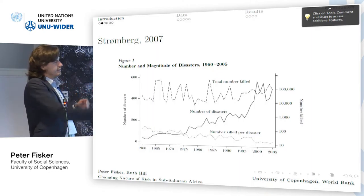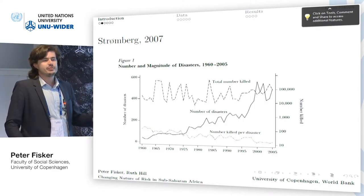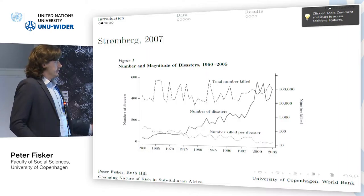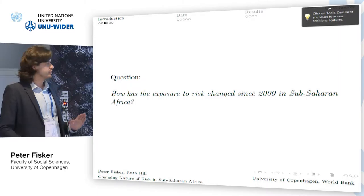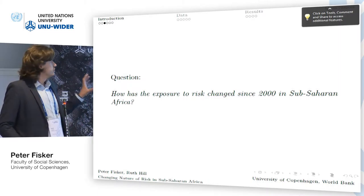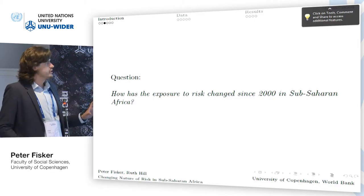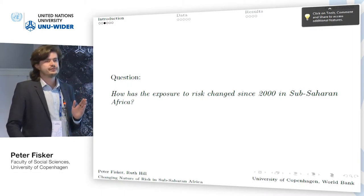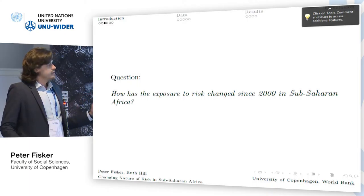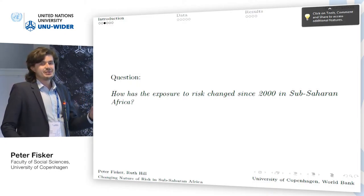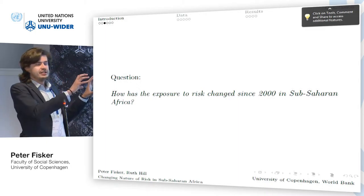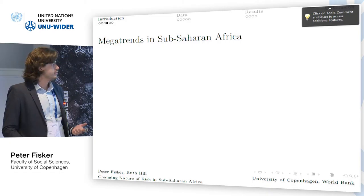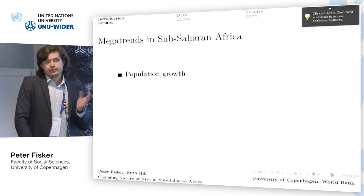Simply, more events enter into this database as the years go by because people are more aware of disastrous events taking place. Anyway, what we want to look at in this study is the exposure component. Our question is: how has the exposure to risk changed since 2000 in sub-Saharan Africa? We look at the period 2000 to 2015, completely disregarding the vulnerability component. We look at hazards and population and overlay the two to get an idea of how exposure to different risks has evolved.